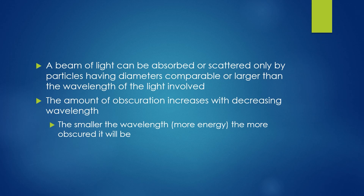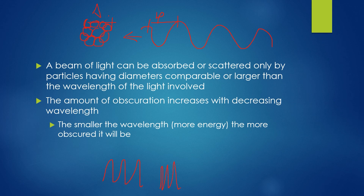A beam of light can be absorbed or scattered only by particles having diameters comparable or larger than the wavelength of the light involved. If you have a particle with a diameter essentially the same as the wavelength coming through, it can be absorbed or scattered. The amount of obscuration will increase with decreasing wavelength — so as the wavelength gets smaller and smaller, basically the closer we get to gamma rays, the higher the chance of it becoming scattered as it goes through the interstellar medium.